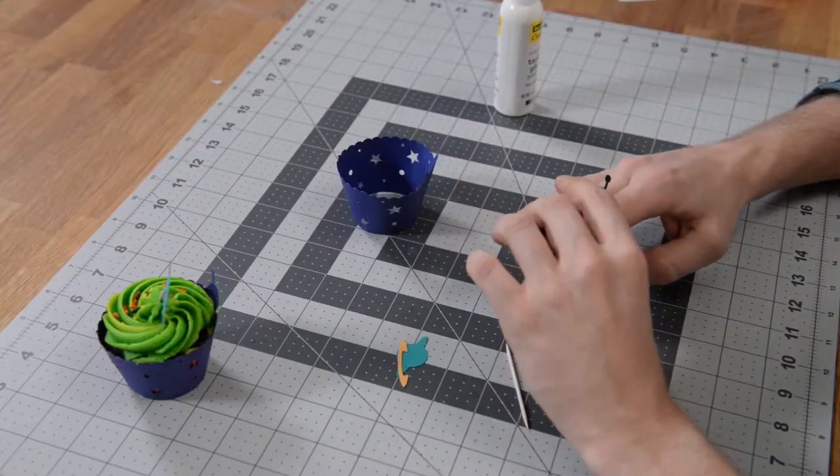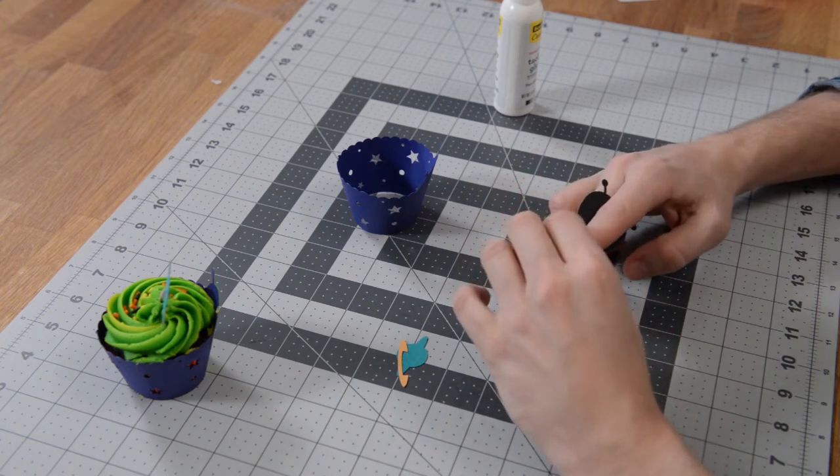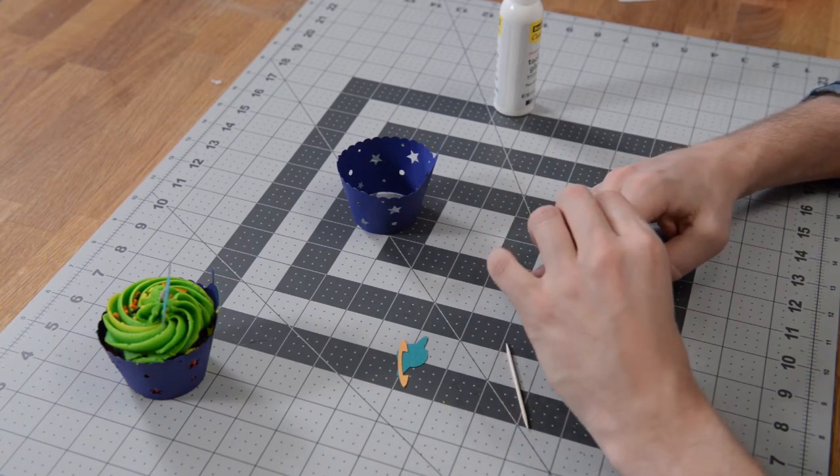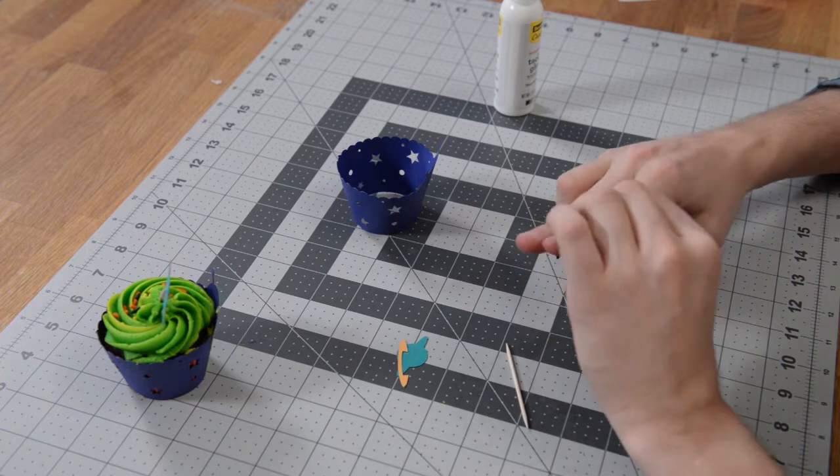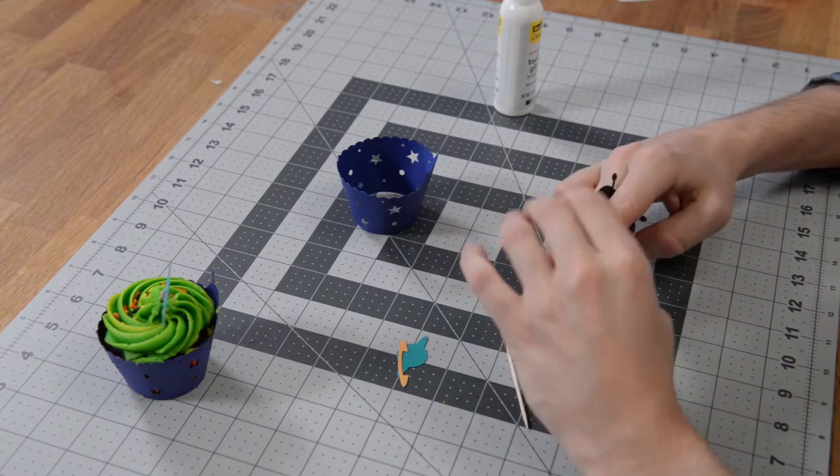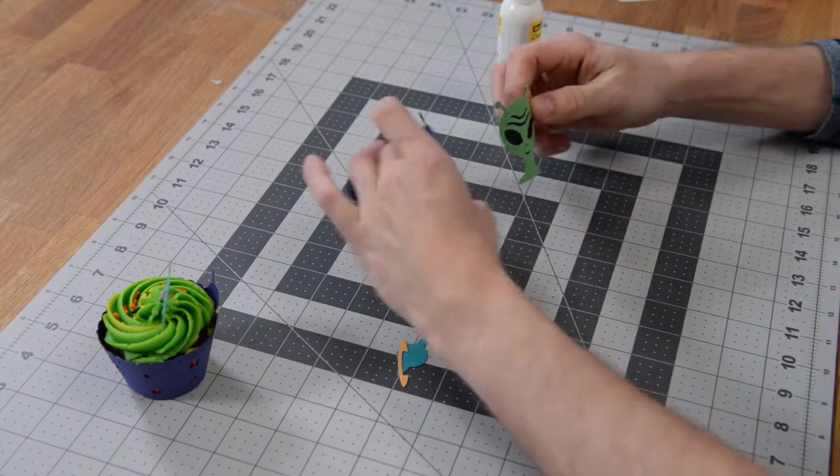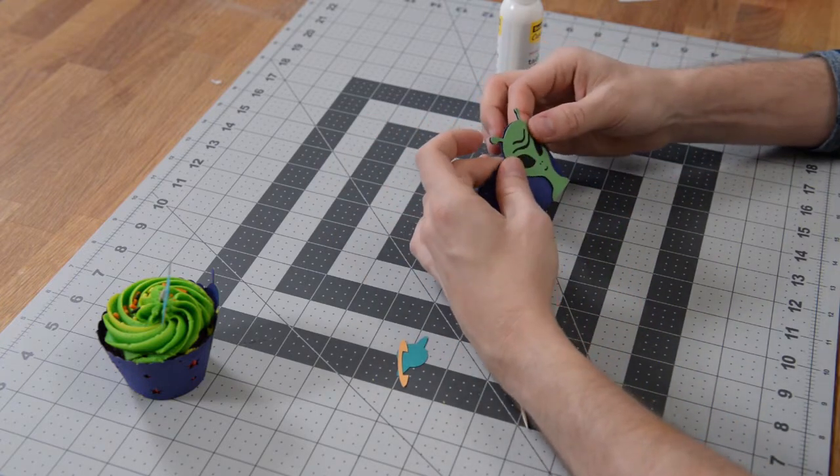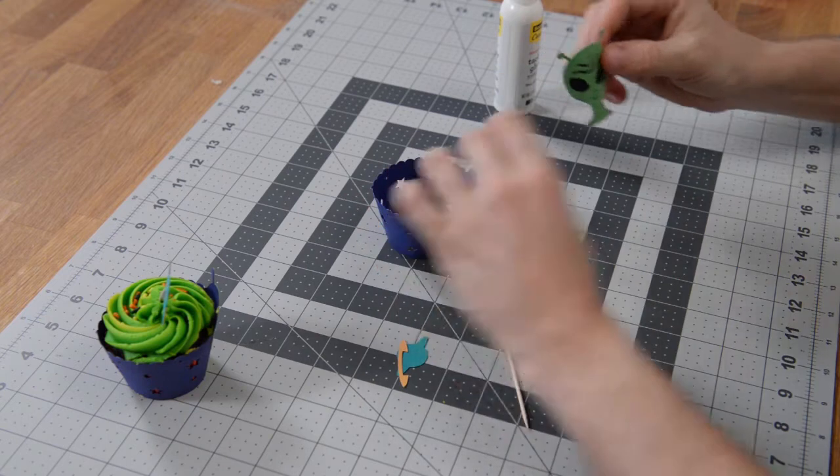Since we're taking a flat item and wrapping it around something that's round, what I did was I just took my finger and placed it in the middle of this thing, like between two of these fingers here, and I just took it and wrapped it around my finger a little bit to give it a natural curve. That way it stays a lot better when you place it on your cupcake wrapper.